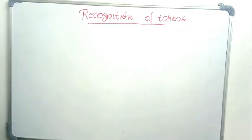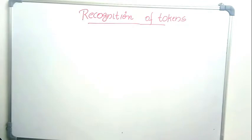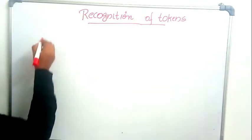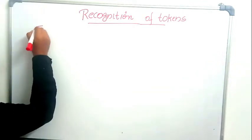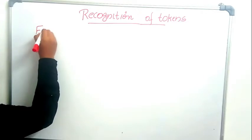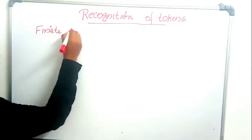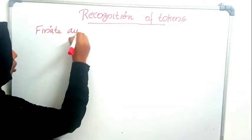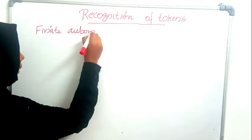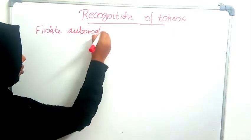In this video we will see recognition of tokens. In the last video we have seen specification of tokens using regular expressions. Recognition of tokens will be done using finite automata — we will be using finite automata to recognize tokens.